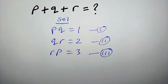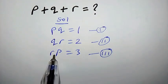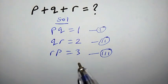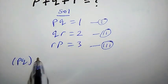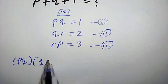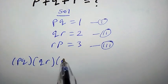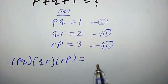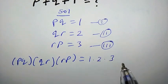The first step we are going to take is to multiply this left-hand side together and this right-hand side together. So we have PQ times QR times RP equals 1 times 2 times 3.